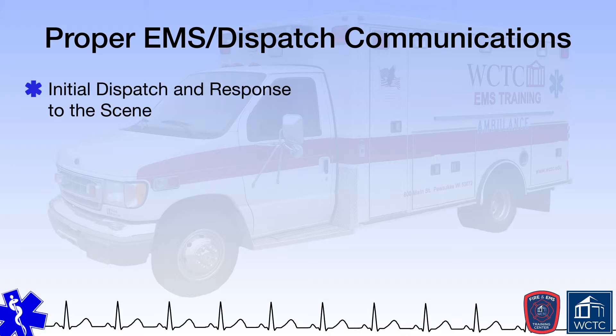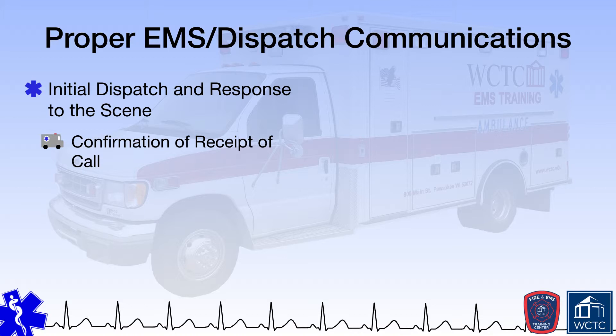An EMS response often begins with receiving a dispatch. This could be through the use of an in-station alerting system, the use of pagers, monitoring radio, or even a smartphone or computerized application that notifies responders of a need for their services. Regardless of how the initial dispatch is received, the crew must acknowledge receipt of the call. This typically entails repeating the information received from dispatch to ensure the responding crew has the correct information, including the location to which they will be responding. Responders should also notify dispatch when they are en route, and in systems that use response priorities, indicate whether they are responding emergently with lights and siren activated. If response is delayed, as may happen if the ambulance encounters a train, dispatch is often notified.